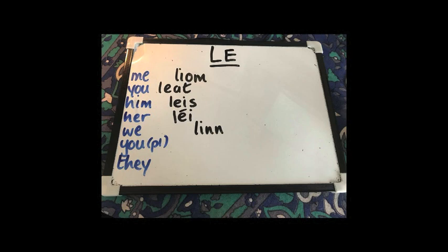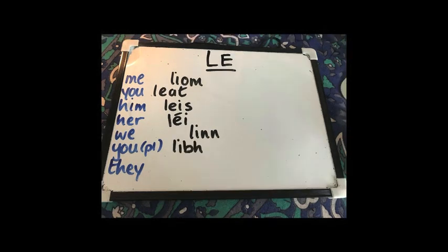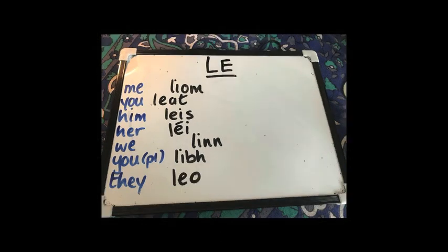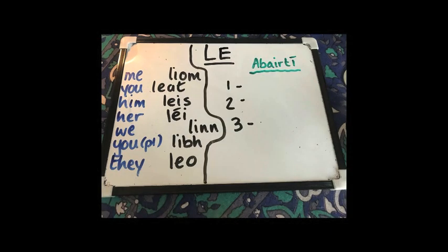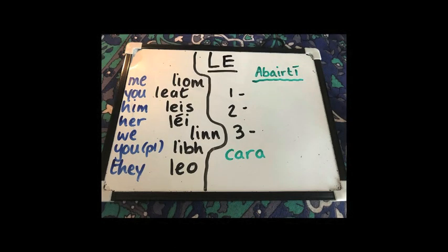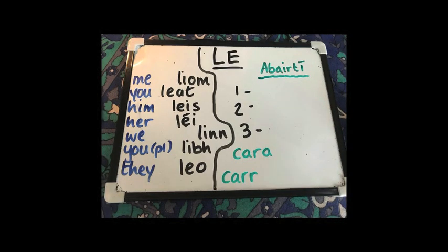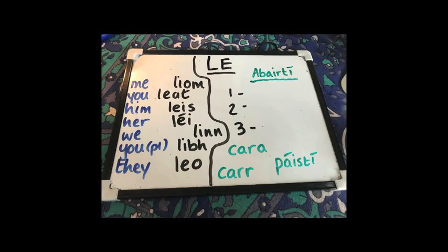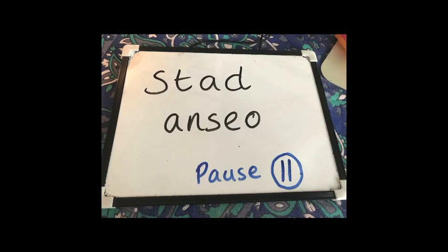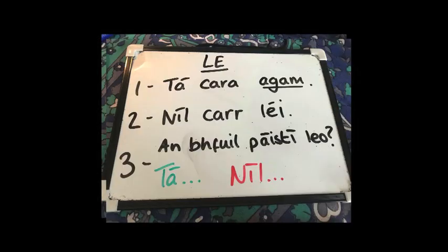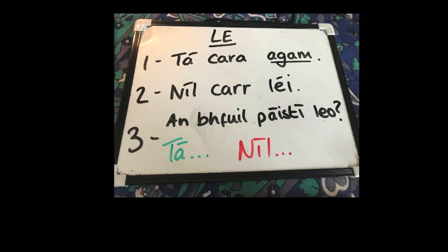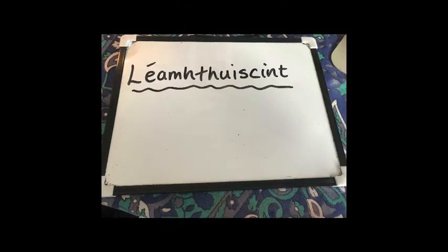With you plural — libh, libh, and with them — leo. So again we'll try our abairtí, our three sentences. Pause here after I give you the three words I want you to use: cara — friend, carr — car, and páistí — meaning children. In my examples I've actually made a mistake in my first one — it should say tá cara liom, with me L-I-O-M. Níl carr léi — there's no car with her. An bhfuil páistí leo? — is there children with them? Tá or níl.